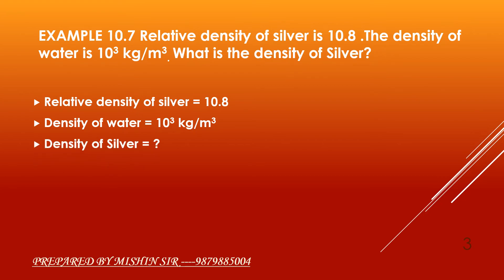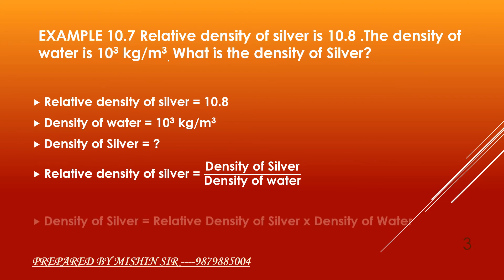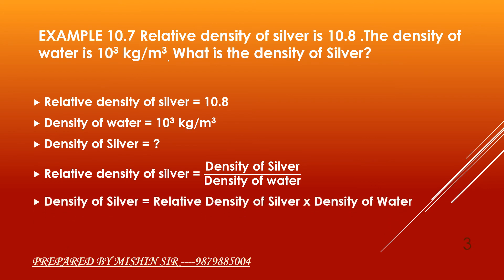Now we apply the formula of relative density. Relative density of silver is equal to density of silver upon density of water. We can rewrite this as: density of silver is equal to relative density of silver into density of water, which equals 10.8 into 10³ kg per meter cube.